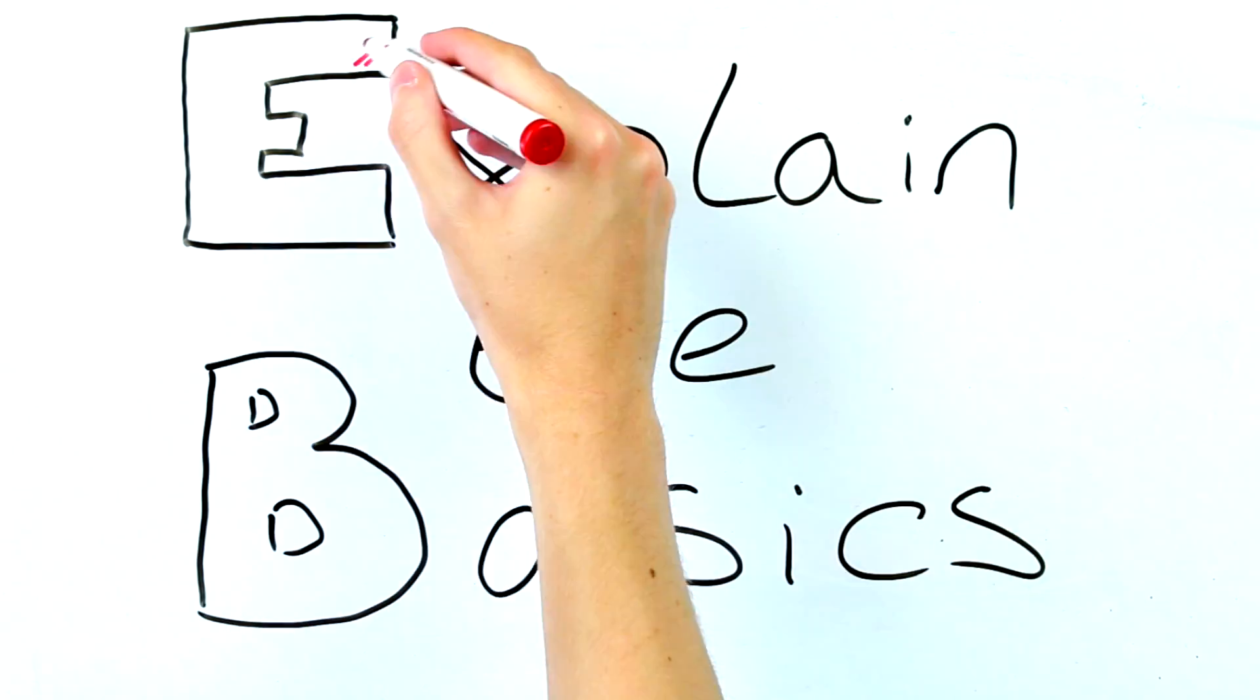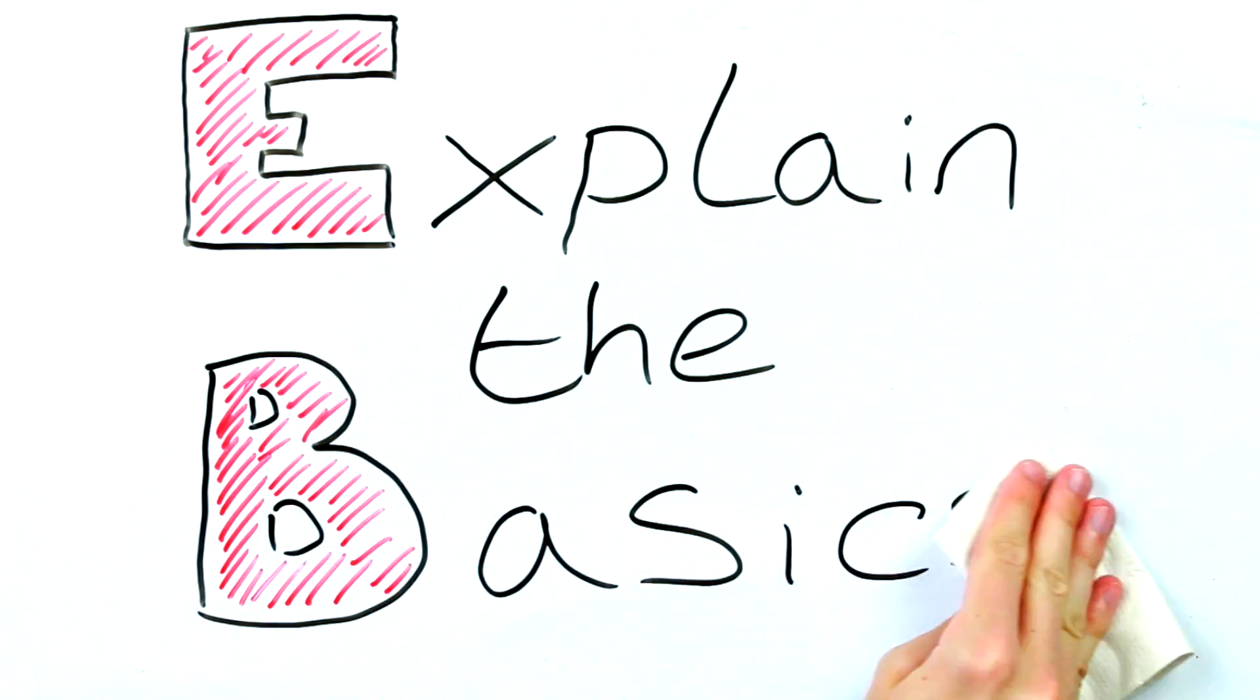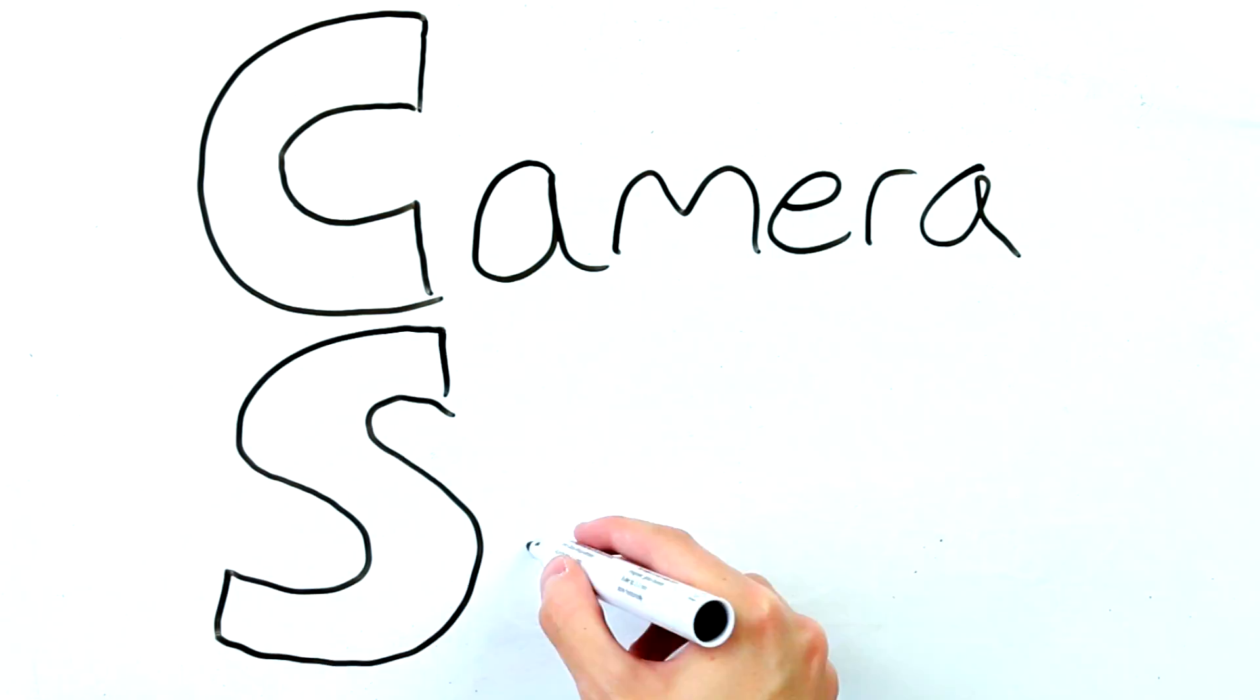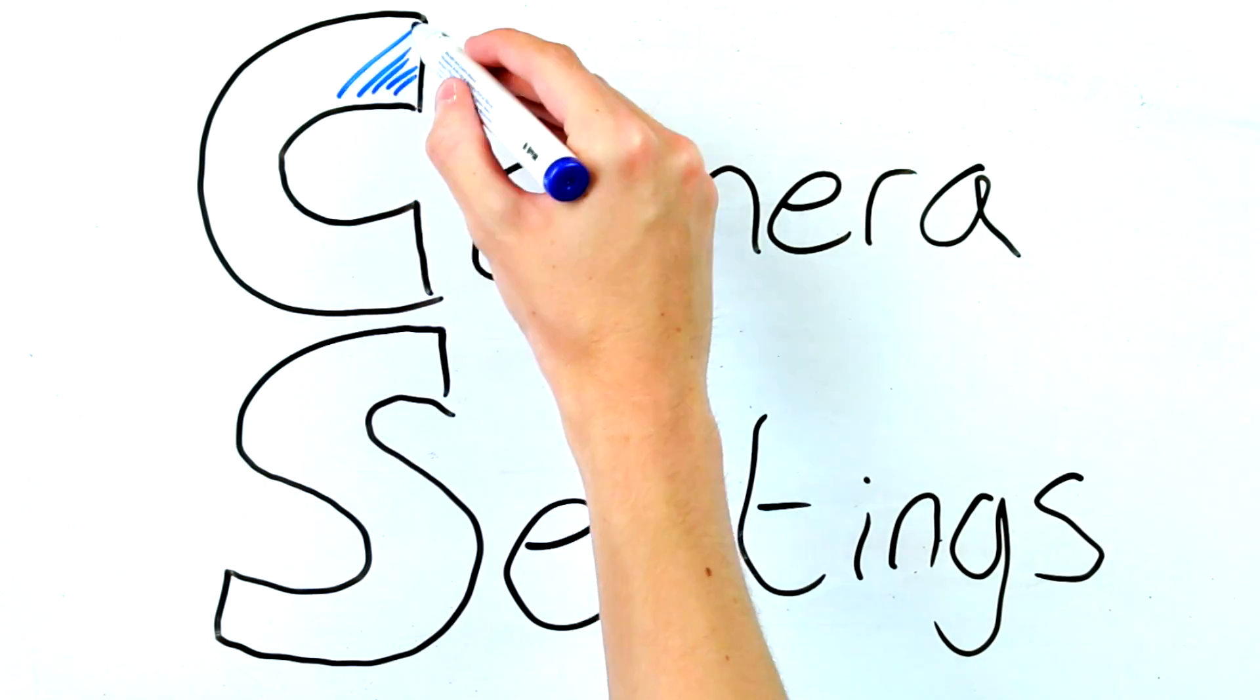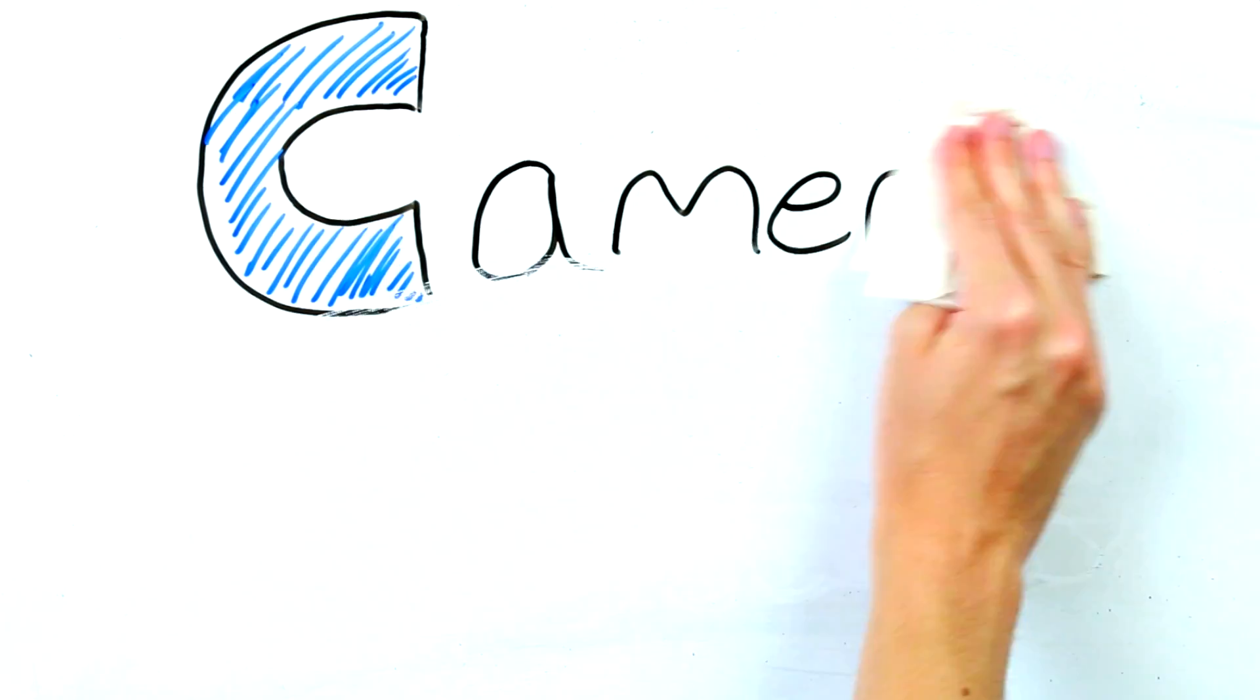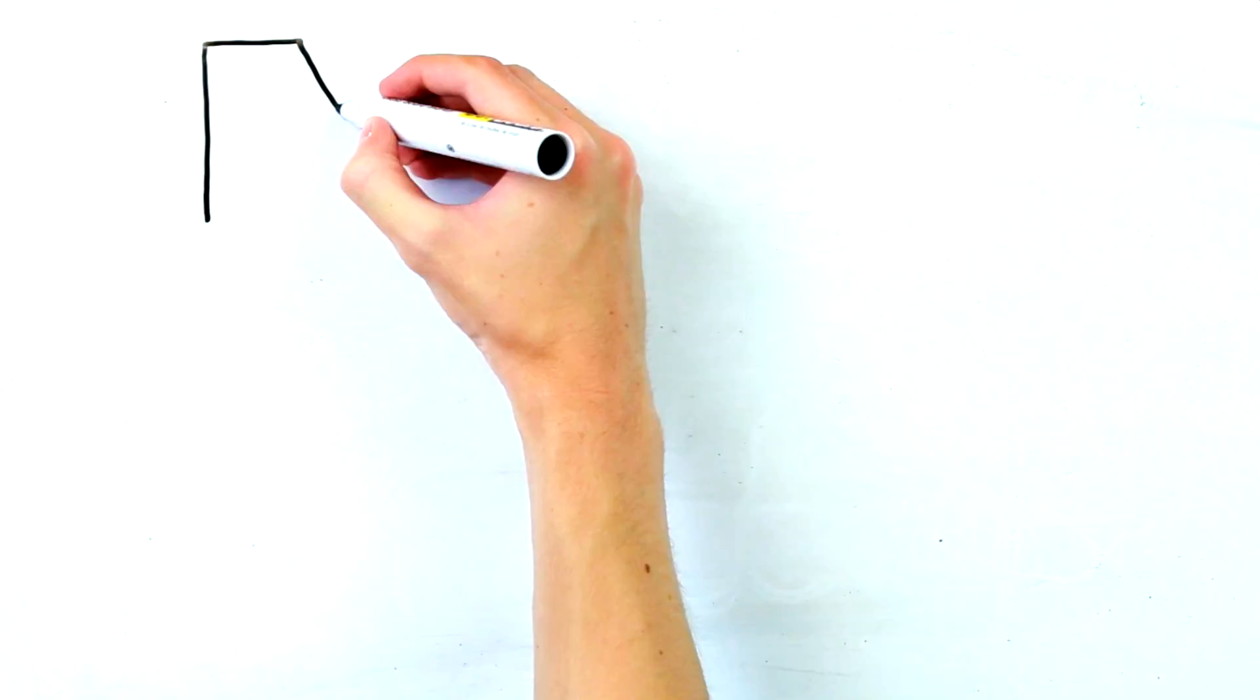Hello and welcome to episode 7 of our explain the basics series. This week's episode is titled camera settings and as it suggests this episode will cover terminology that you might come across in the backend settings of your camera. Simple enough really so let's get going with our first piece of terminology.